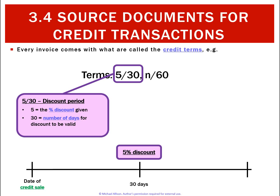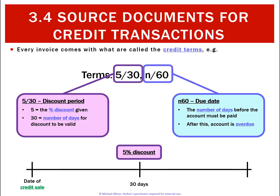The 'net 60' part is simply the due date — the actual number of days the customer has to pay the account. After that date the account will be classified as overdue. So in this example, after 60 days it will be classified as an overdue account, with the due date being the 60th day.